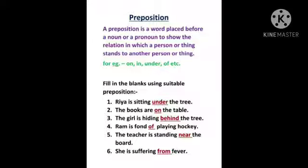Second, the books are on the table. On preposition — किताबें table पर रखी हुई है. The girl is hiding behind the tree — जो girl है वो पेड़ के पीछे छुपी हुई है. तो behind क्या है इसमें? Preposition.